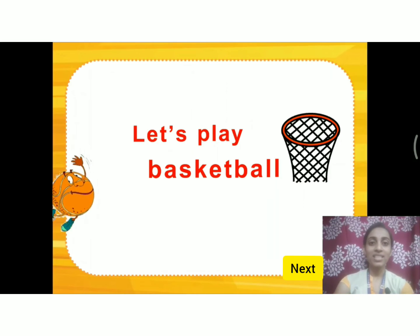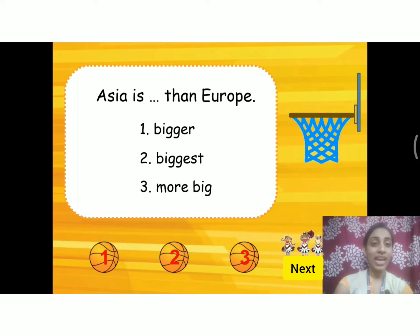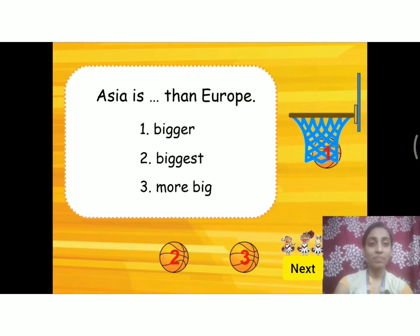Now let us test our understanding. Asia is _____ than any other continent. The options are: bigger, biggest, more big. Since 'than' is used, it is a comparative degree. The comparative form of 'big' follows the CVC rule — double the G and add -er. So the answer is 'bigger', spelled B-I-G-G-E-R. Very good.